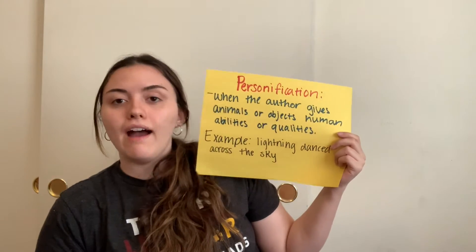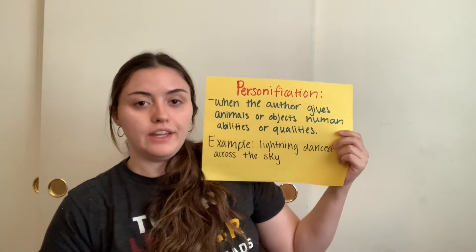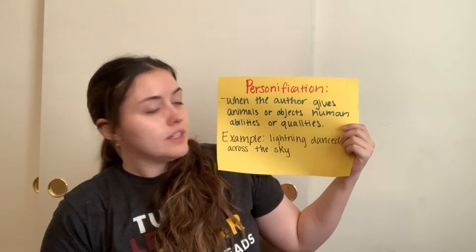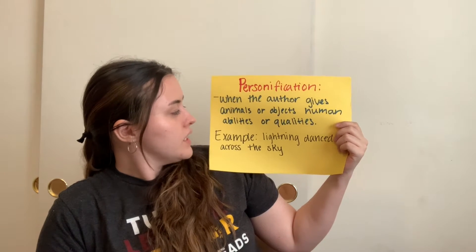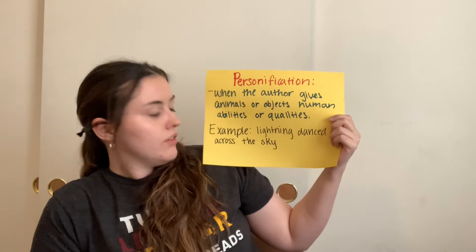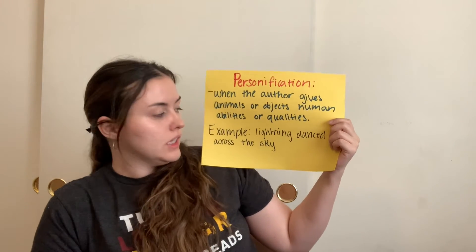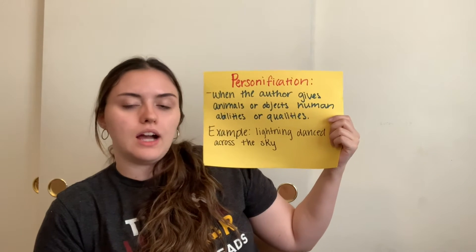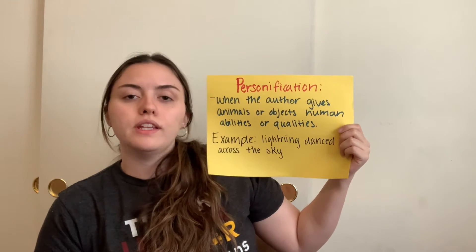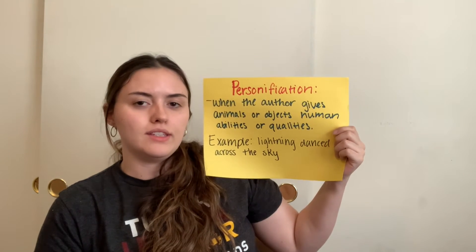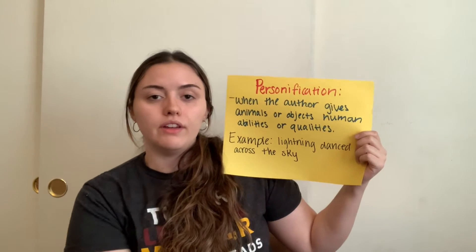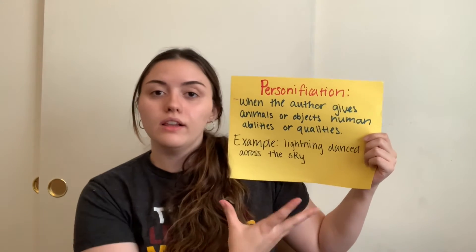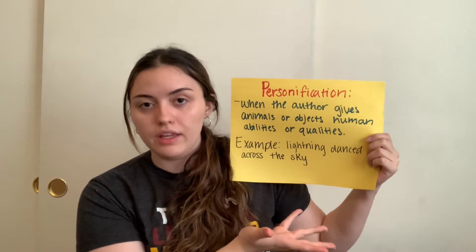And lastly we have personification. This is seen when the author gives animals or objects human abilities or qualities. For example, lightning danced across the sky. We know that the lightning did not actually dance — this is the author giving a non-human or inanimate thing a human ability.